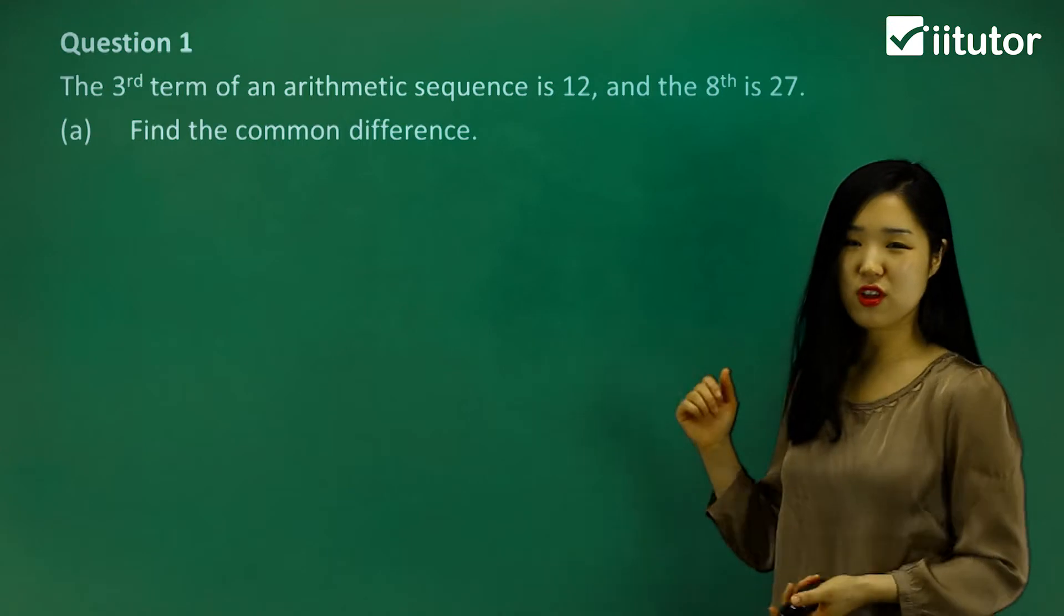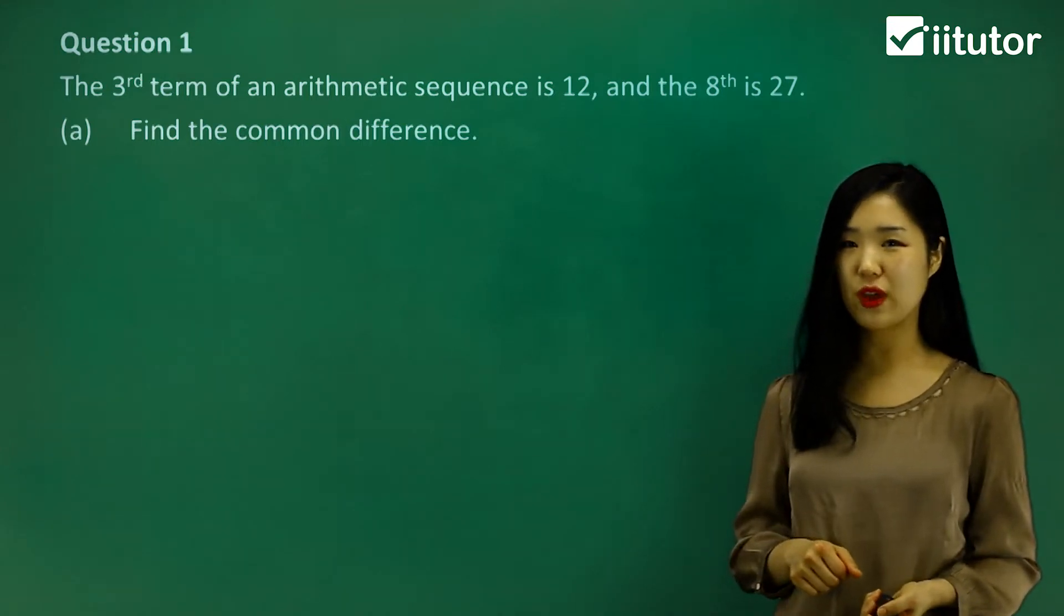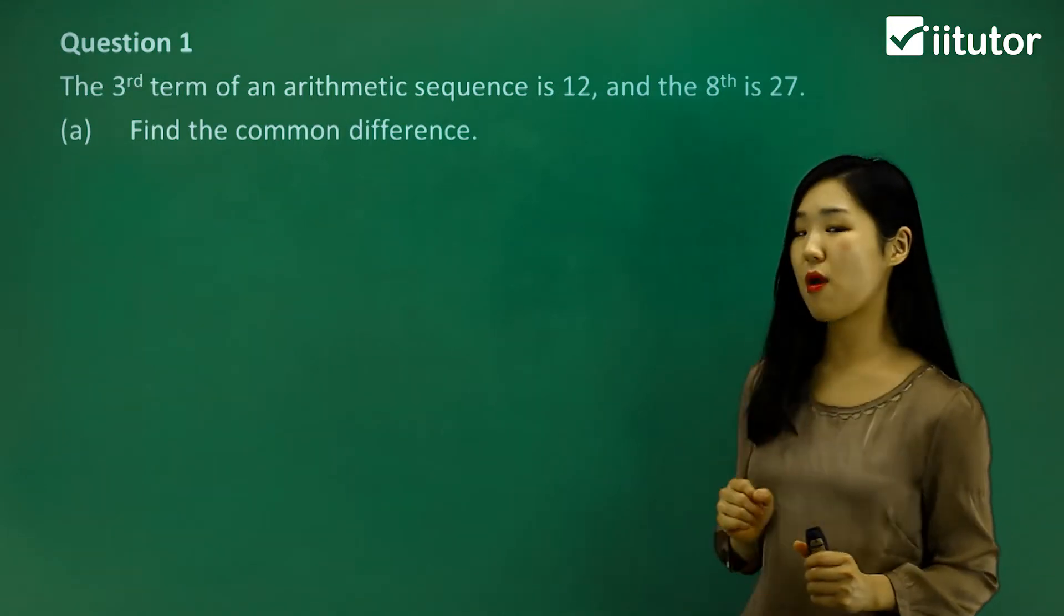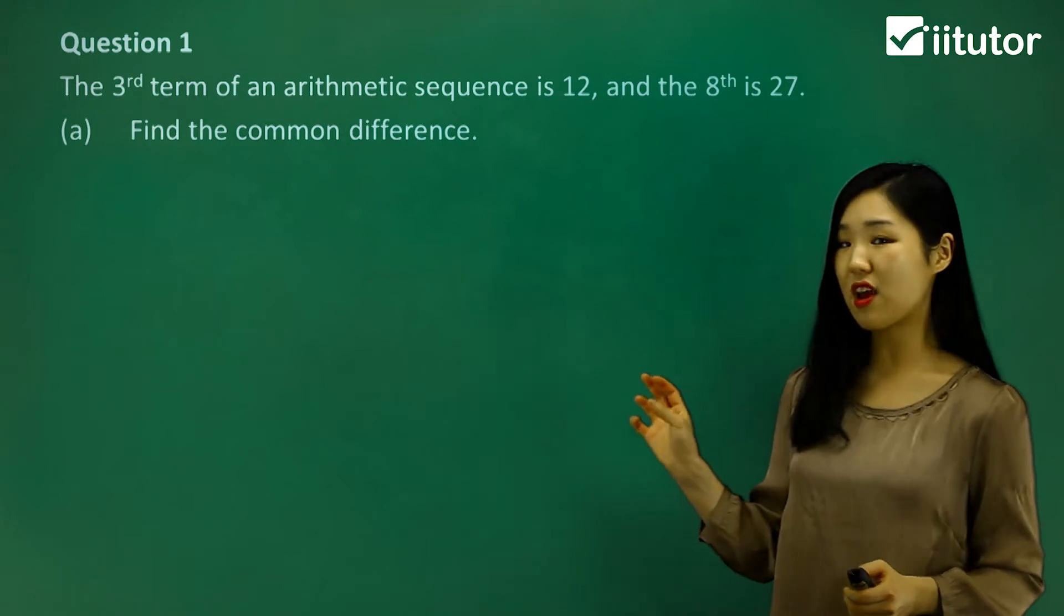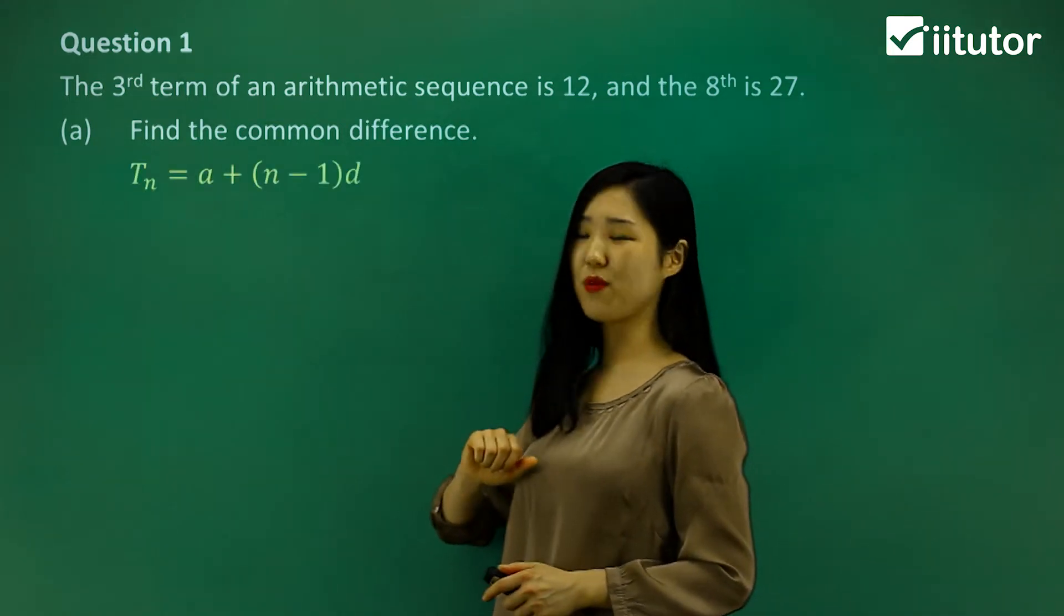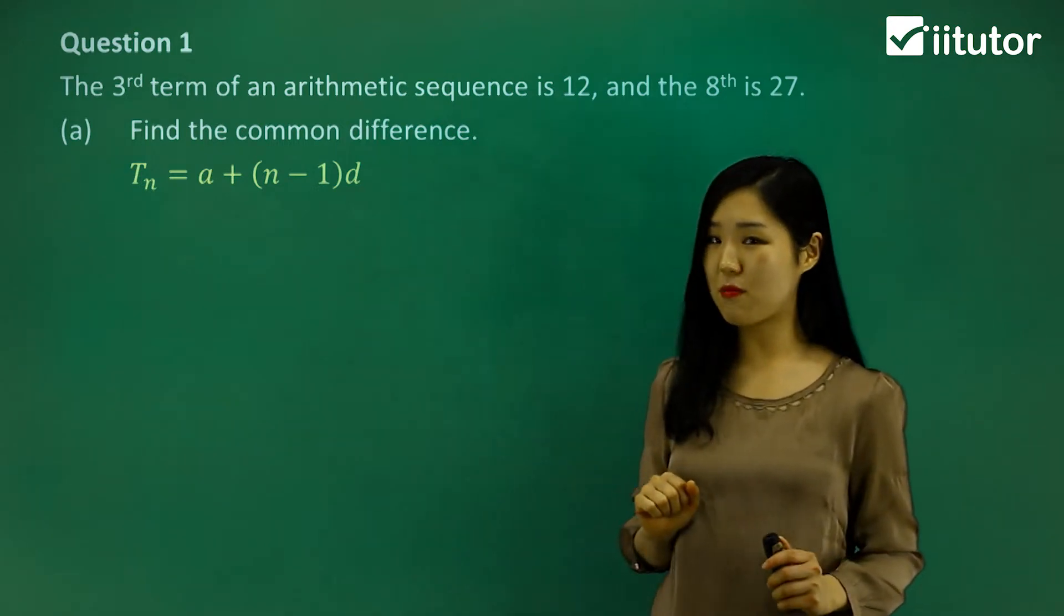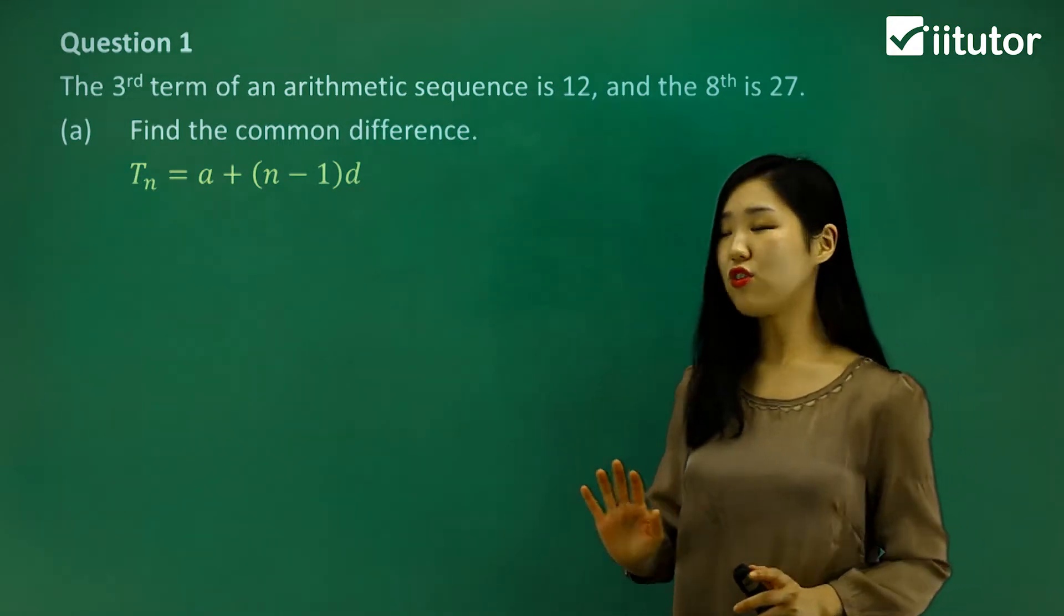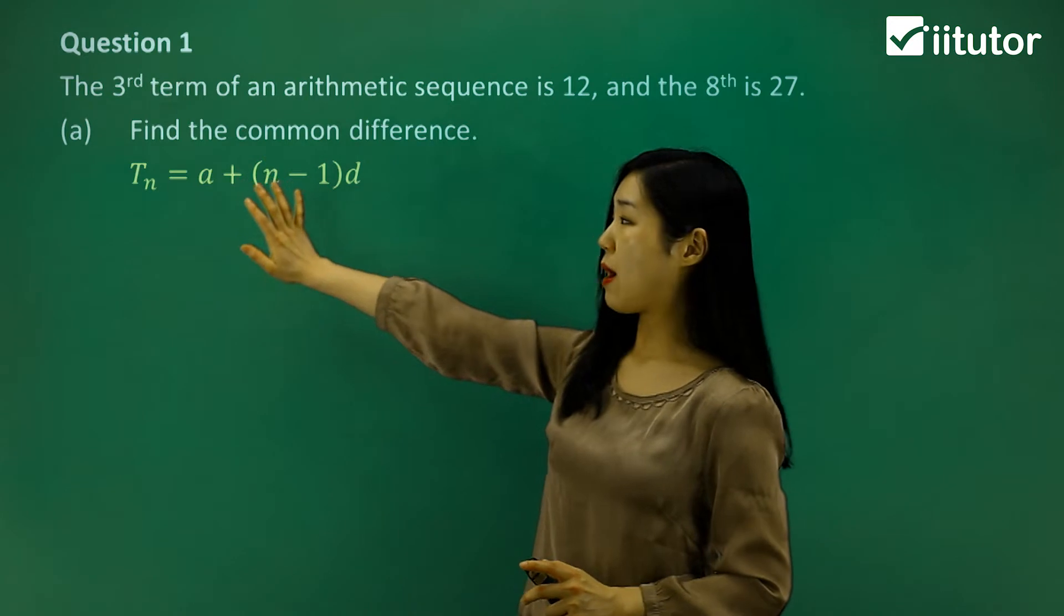To find that we have to utilize some of the given information. They give us the nth term - the third term and the eighth term - which means we have to use our Tn formula. You should all be familiar with this one. Tn equals a plus n minus 1 times d. Now let's use the first bit of information using this formula.